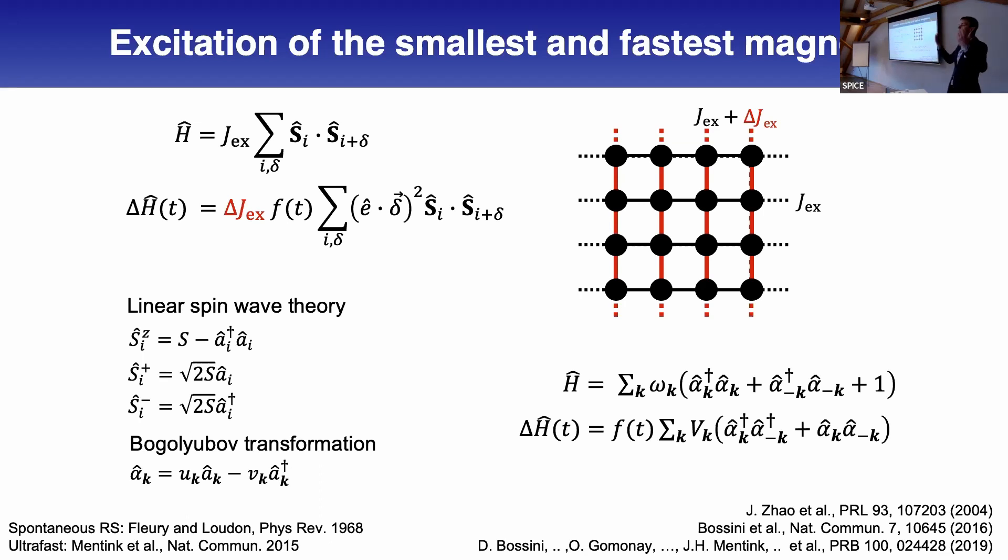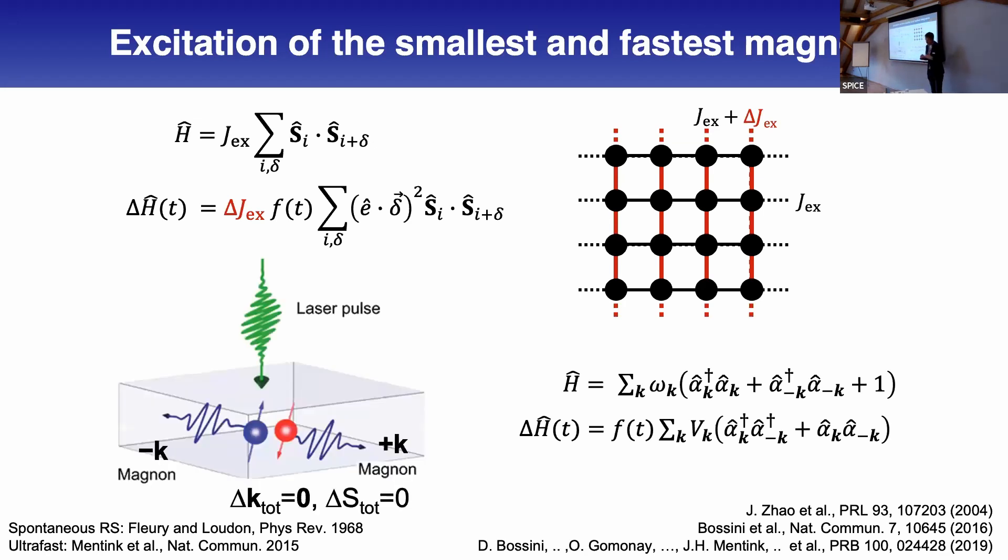You have the creation and annihilation of pairs of magnons with opposite spin. It's like Cooper pairs in superconductors with opposite spin and momentum, but here for bosons. This picture I took from a joint publication with Olena Gomonay and Davide Bossini, where we have propagating magnons with opposite momentum. The total momentum is zero because this is electric dipole approximation.